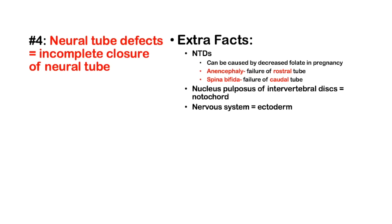Number 4: Neural tube defects result from incomplete closure of the neural tube, typically caused by decreased folate in pregnancy. The two most common are anencephaly (failure of the rostral tube) and spina bifida (failure of the caudal tube). The nucleus pulposus of intervertebral discs is formed from the embryonic notochord, and the nervous system comes from ectoderm.